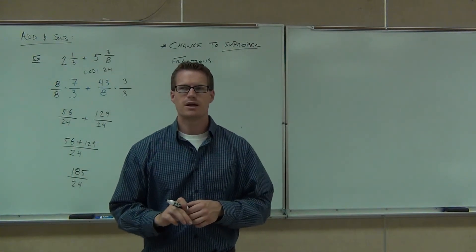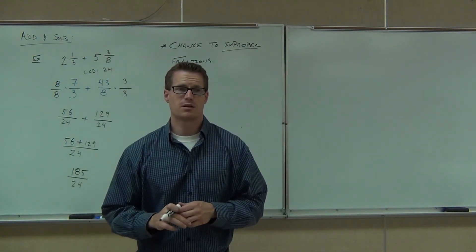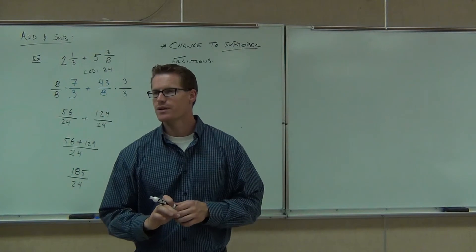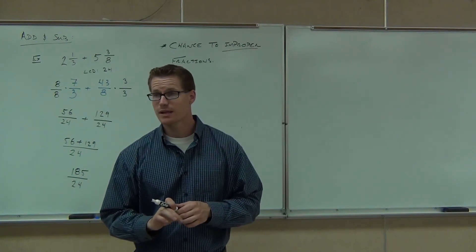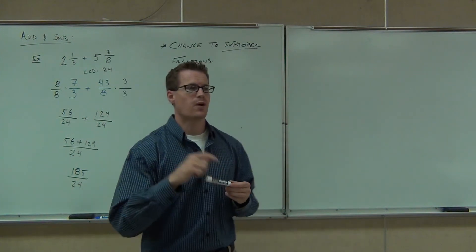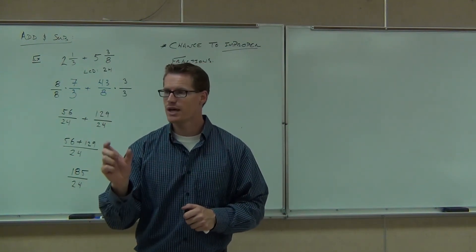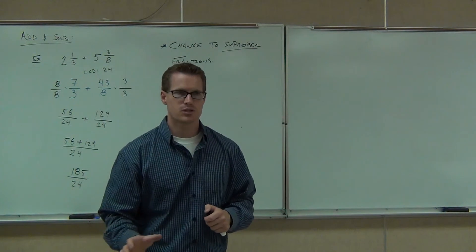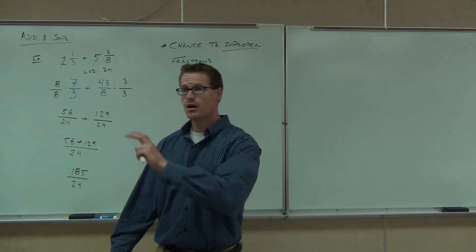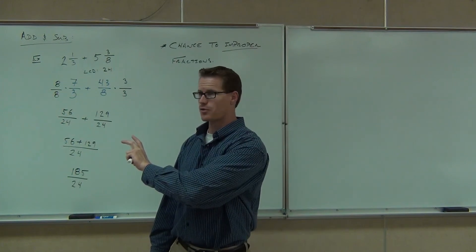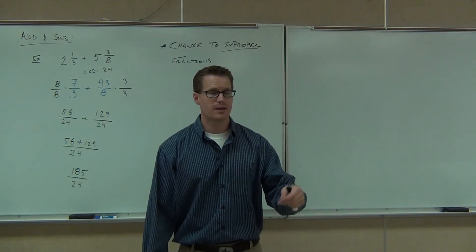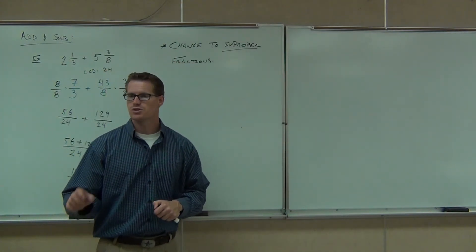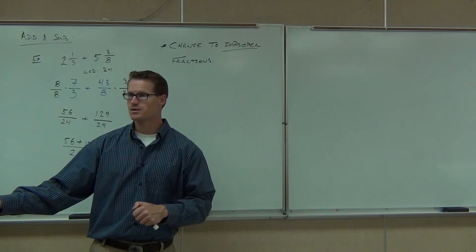Can you change 185 over 24 back into a mixed number? Sure — you divide it. If you have a scientific calculator, you put in 185, press the fraction button, put 24, press equals, and it will reduce it and change it into a mixed number automatically for you. On your test, I'm not going to give you numbers that come out this big — I just want you to be able to do this process.